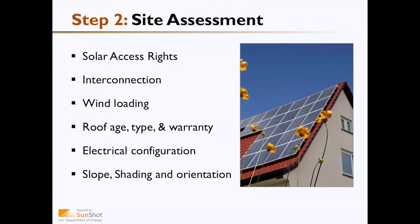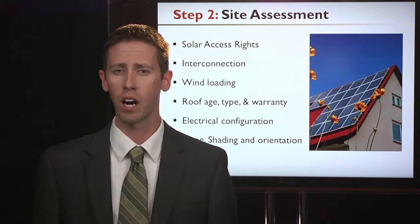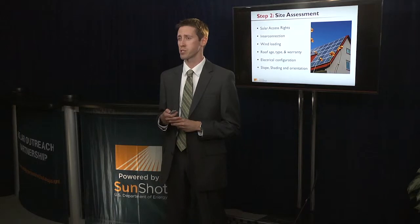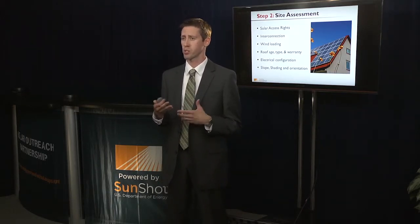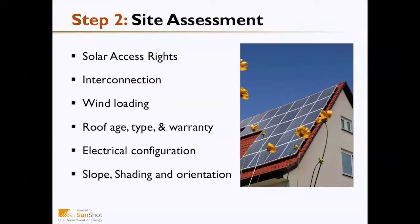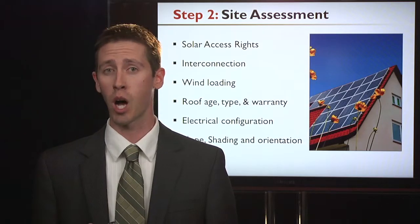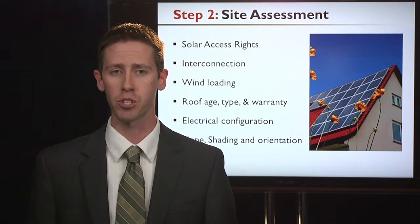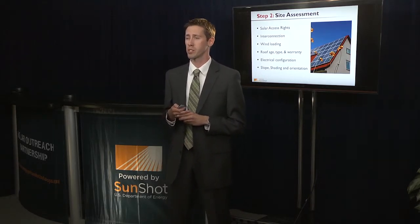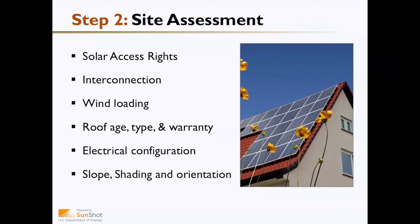Step two is site assessment. Here we want to look at solar rights laws and the ability to install solar on that site. Key factors include interconnection — the ability to connect to the utility and proximity to distribution and transmission lines — and wind loading, such as whether the site is in a hurricane zone or has higher winds that could affect panels on a flat roof. The age, type, warranty, and condition of the roof are important; solar sits on top of the roof, so a sound underlying structure is needed to support the system's weight. The electrical configuration matters too, as updated wiring can ease installation. Finally, consider slope, shading, and building orientation — ideally the system should face south with unshaded roof space at an appropriate slope.